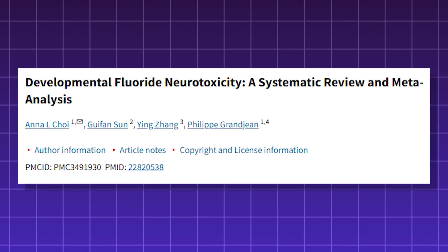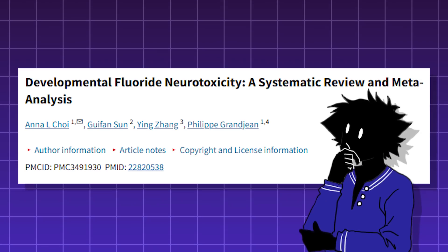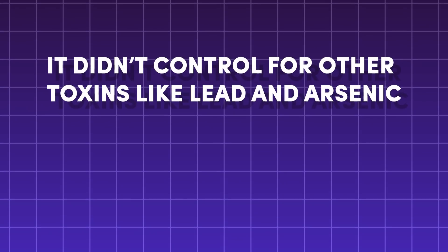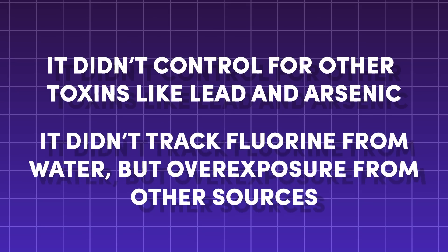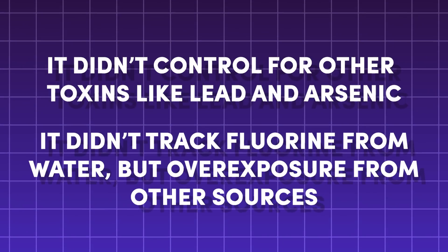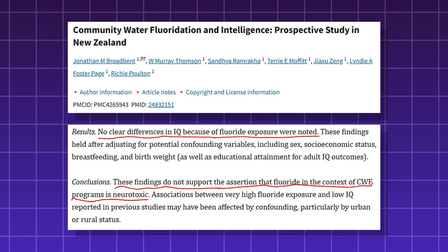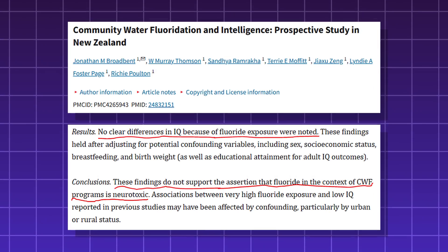Other controversies about fluoride have come from either misunderstanding or misreporting. There have been a few studies about the consumption of fluoride and a drop in IQ in children. However, there were several problems with those studies. First of all, those studies didn't control for other toxins that those children were exposed to, such as lead and arsenic. Those studies also didn't track fluoride in drinking water, but other fluoride sources in high amounts, such as indoor coal burning with no ventilation. Other studies have been conducted and have found no correlation between fluoride in the drinking water and a drop in IQ.